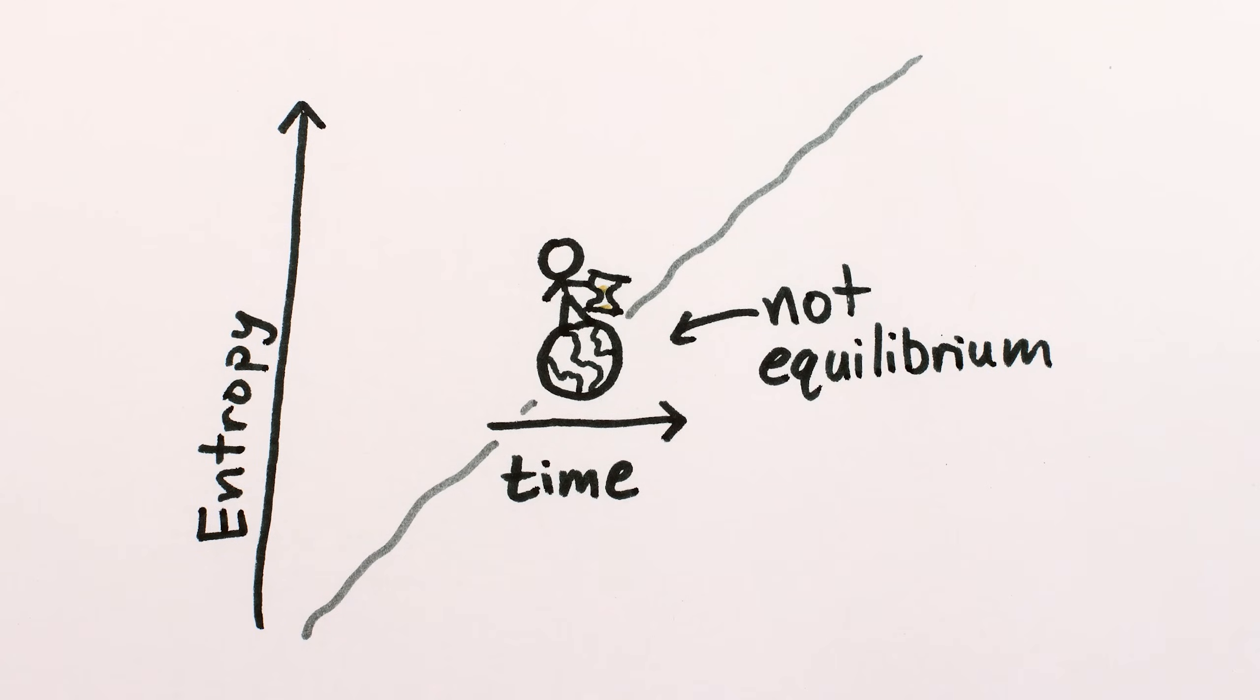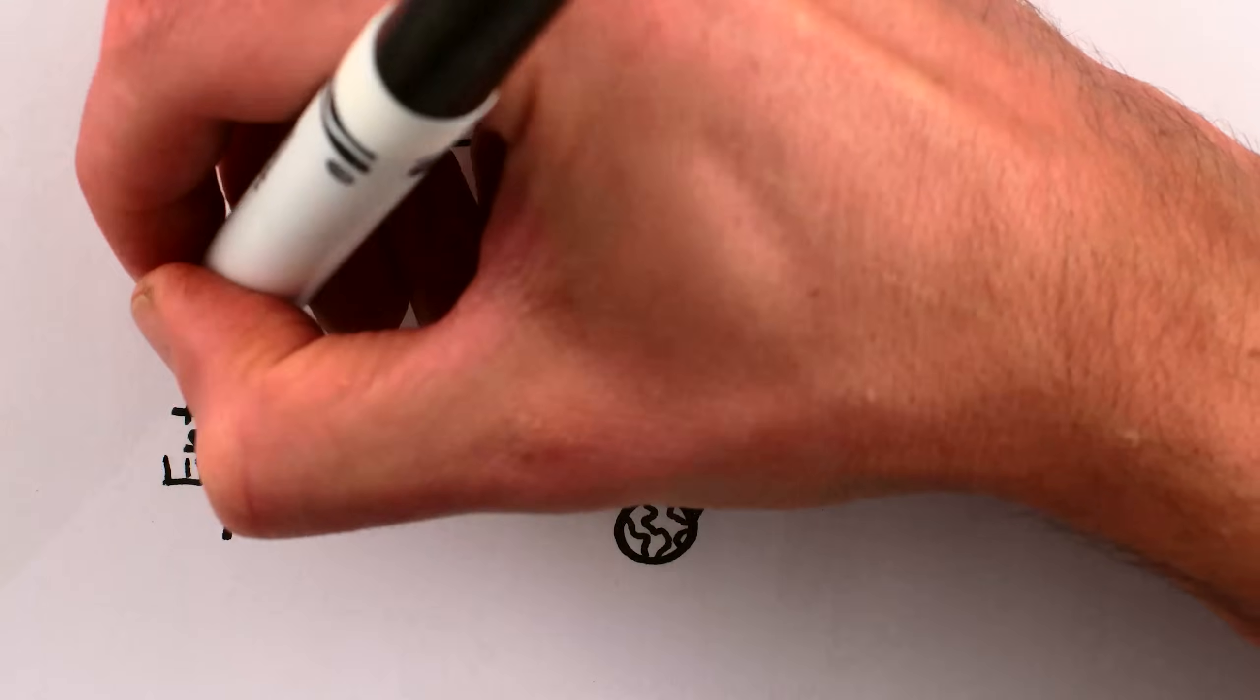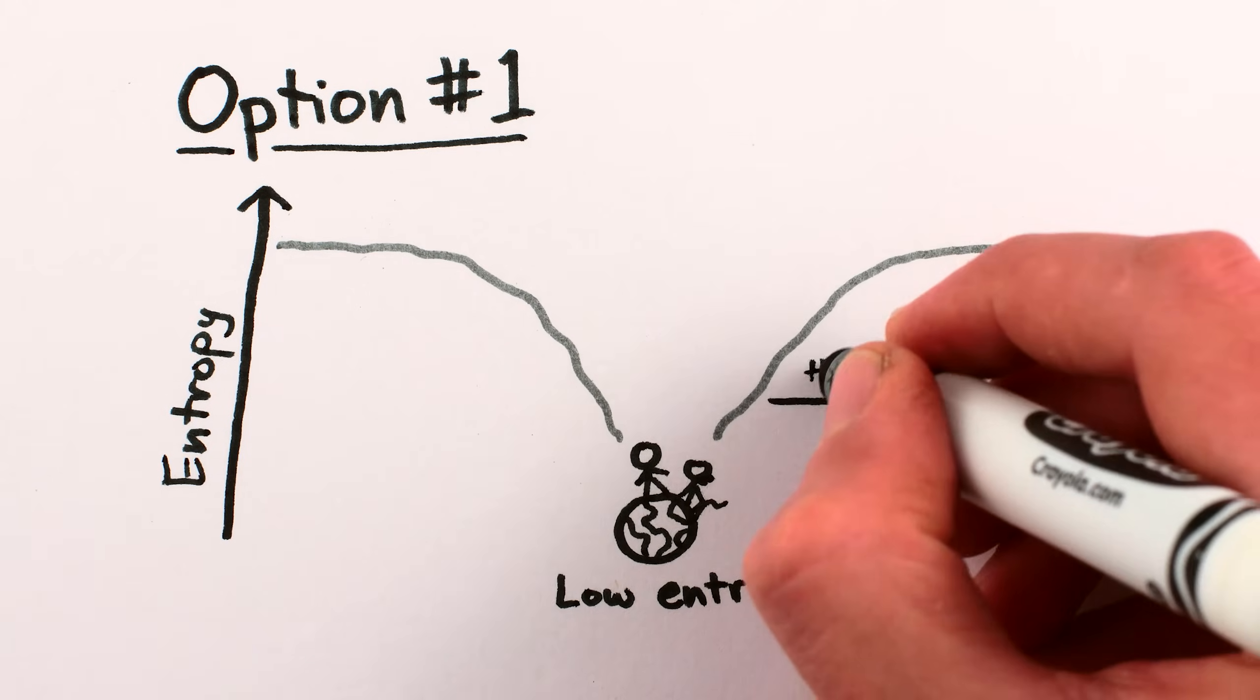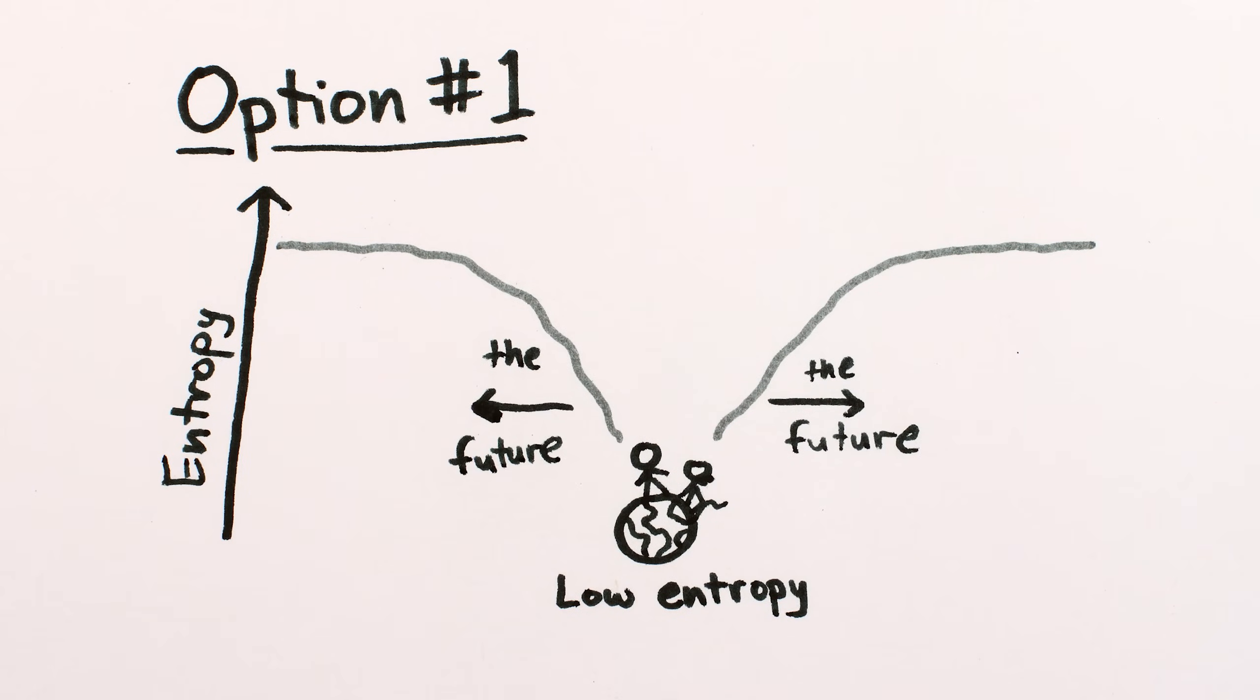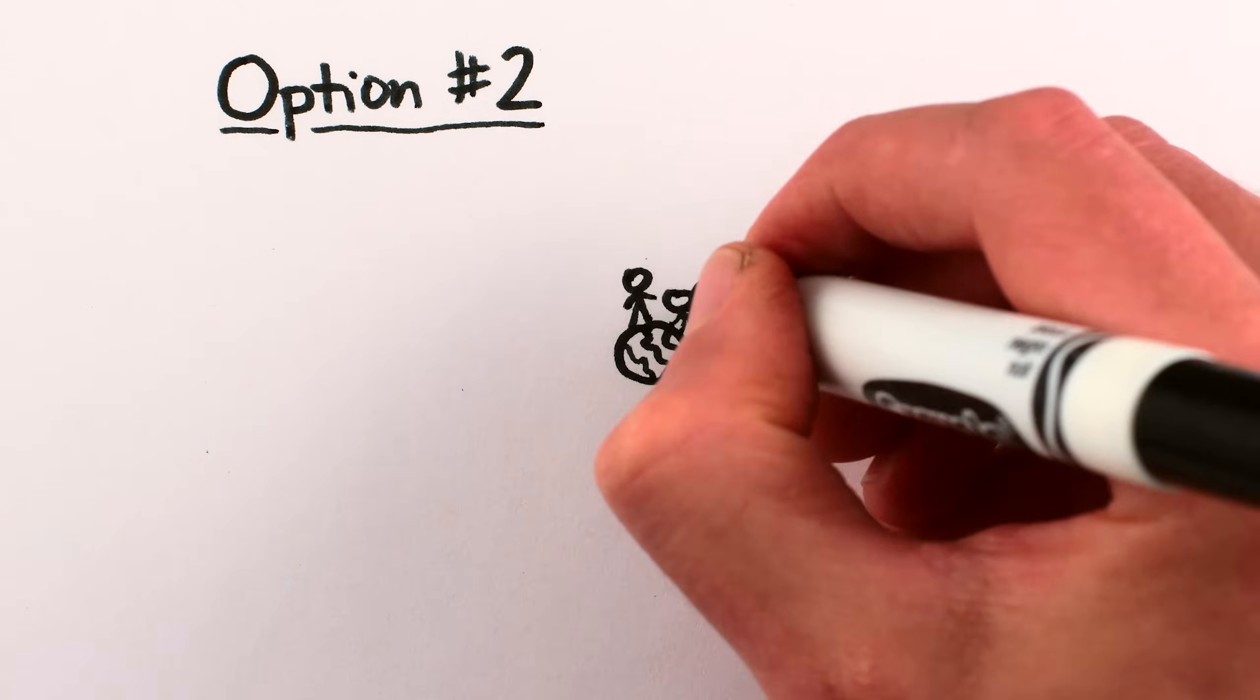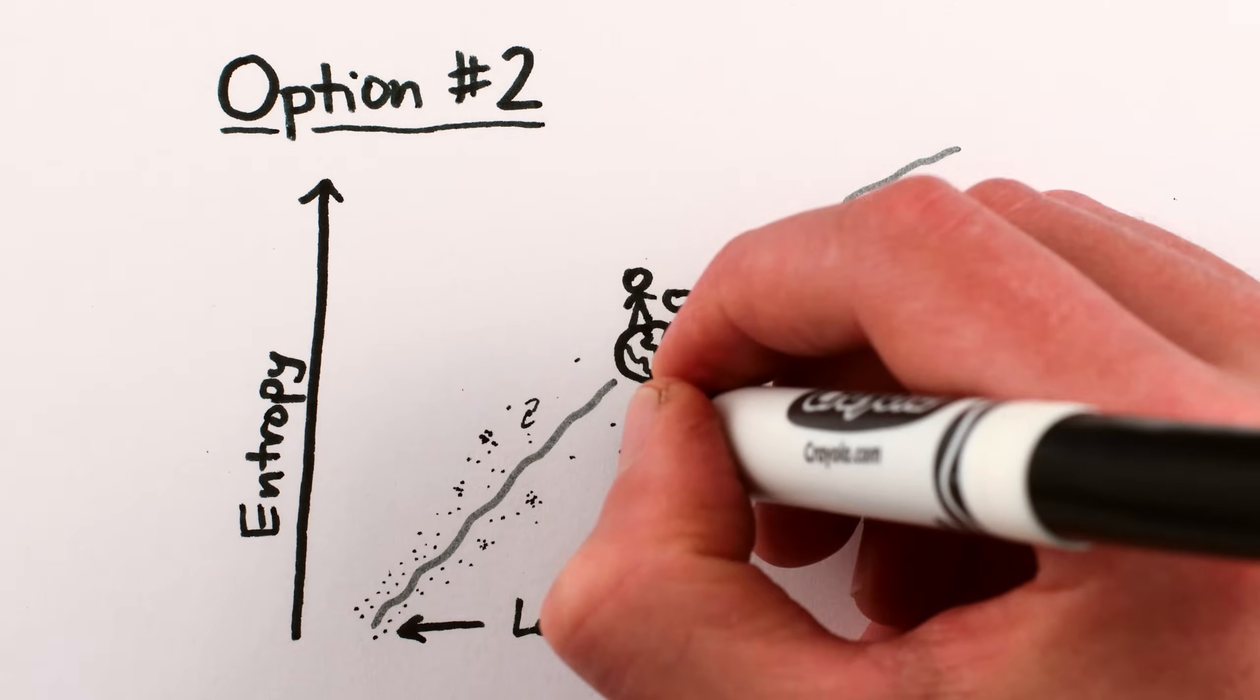There are basically two ways that could happen. Either the universe just happens to be right now in this particular low entropy configuration with two directions of time flowing out forward and backward from now with increasing entropy in both directions, or at some point in the far distant past, the universe started with even lower entropy and disorder has been increasing ever since.